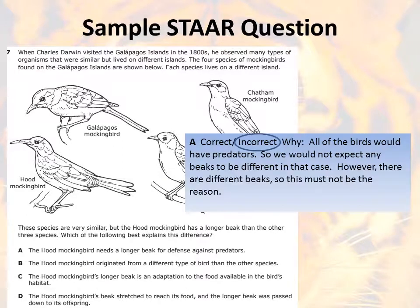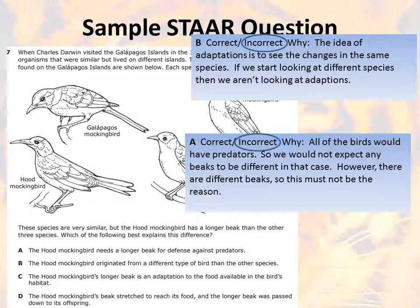Let me help you with the first couple. Answer choice A says the hood mockingbird needs a longer beak for defense against predators. While that might be true, all the birds would have predators, so we would not expect any beaks to be different in that case. However, beaks are different, so this must not be the reason — answer choice A is incorrect. Answer choice B says the hood mockingbird originated from a different type of bird than the other species. This is also incorrect. The whole idea of adaptations is to see changes in the same species from one generation to the next. If we look at different species, we aren't even talking about adaptations. Knowing A and B are incorrect, you're down to C and D — pick the correct one, pick the incorrect one, and write a brief reason why.